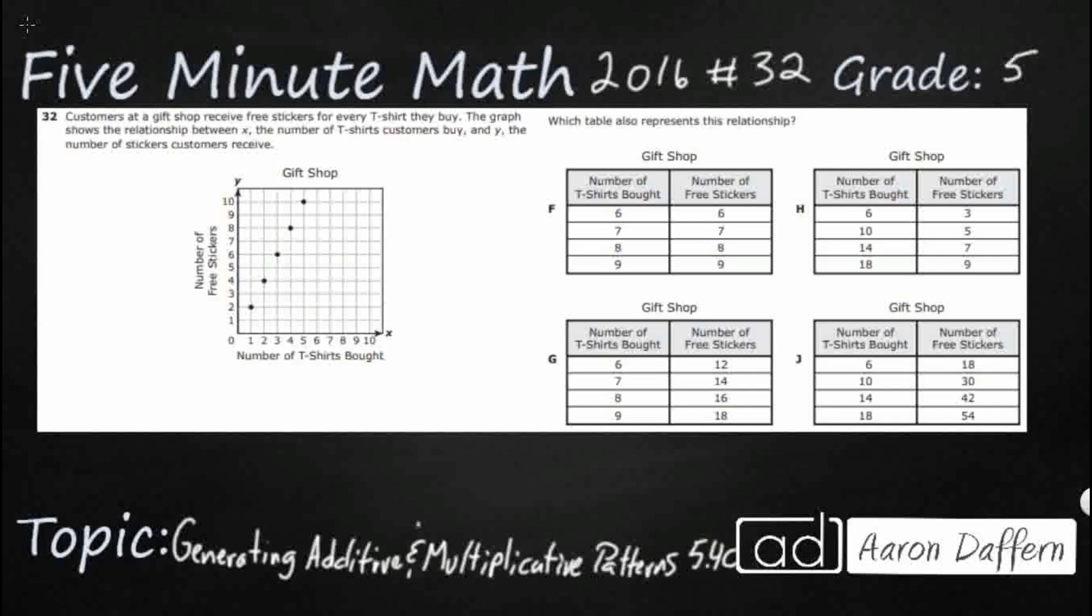We have customers at a gift shop and they are getting stickers for every t-shirt they buy. The graph shows the relationship between x, the number of t-shirts that customers buy - that's our horizontal axis right there. And the number of t-shirts that they buy is related to y, the number of stickers they receive. And the number of stickers, there we go, that is your vertical axis, your y-axis.